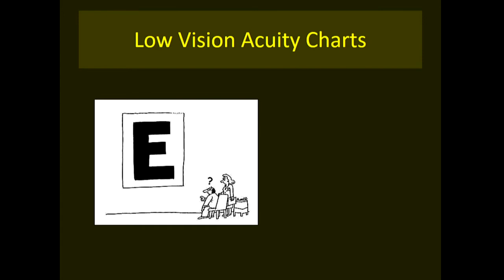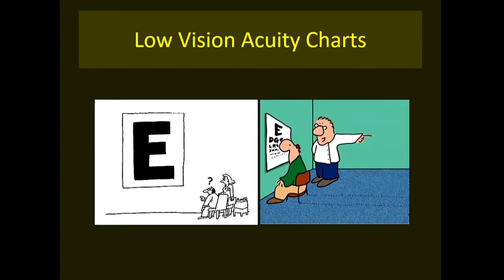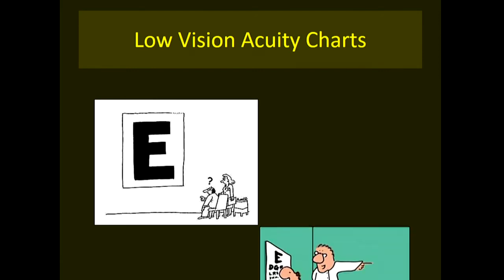Recording vision for low vision patients is a daunting task. Using normal Snellen optotypes would require very large letters, which is impractical. Special charts for low vision with smaller testing distances are available — such as the Keeler distance vision chart with huge optotypes tested at three meters — but in practice we can use the regular Snellen chart at smaller distances.